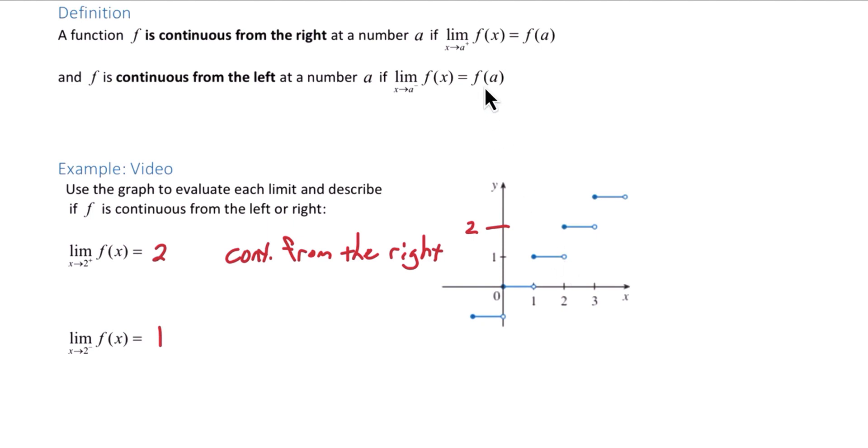Now we want to ask, is it continuous from the left? As you approach 2 from the left, the function's approaching 1. But f of 2, we found earlier to be 2. So we cannot say that this is continuous from the left.